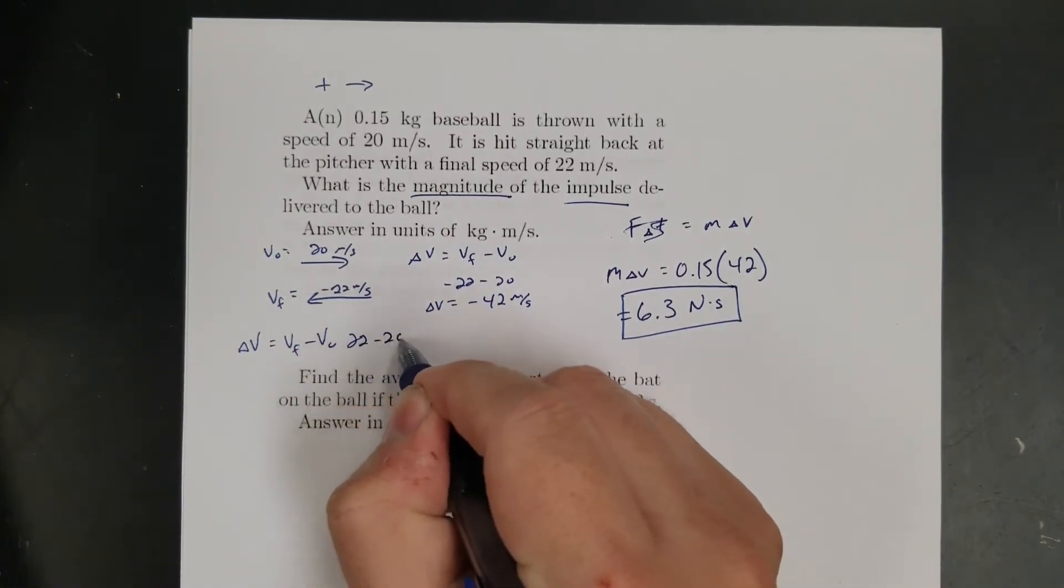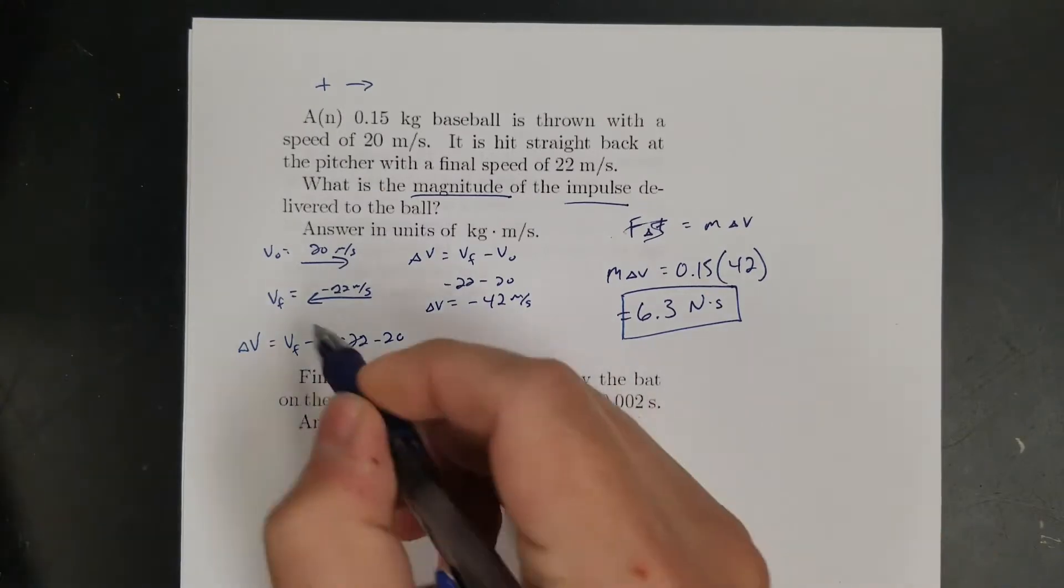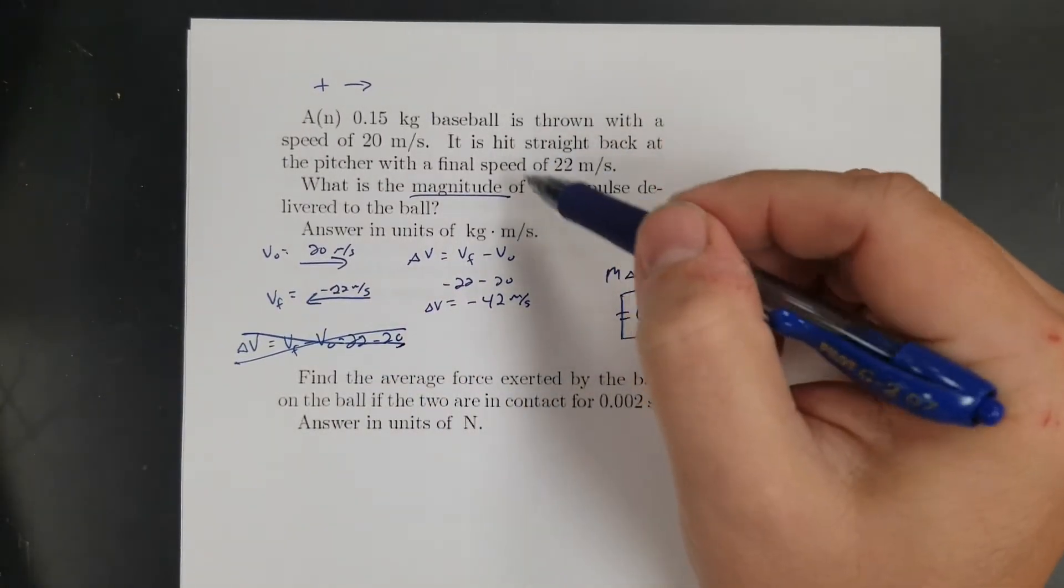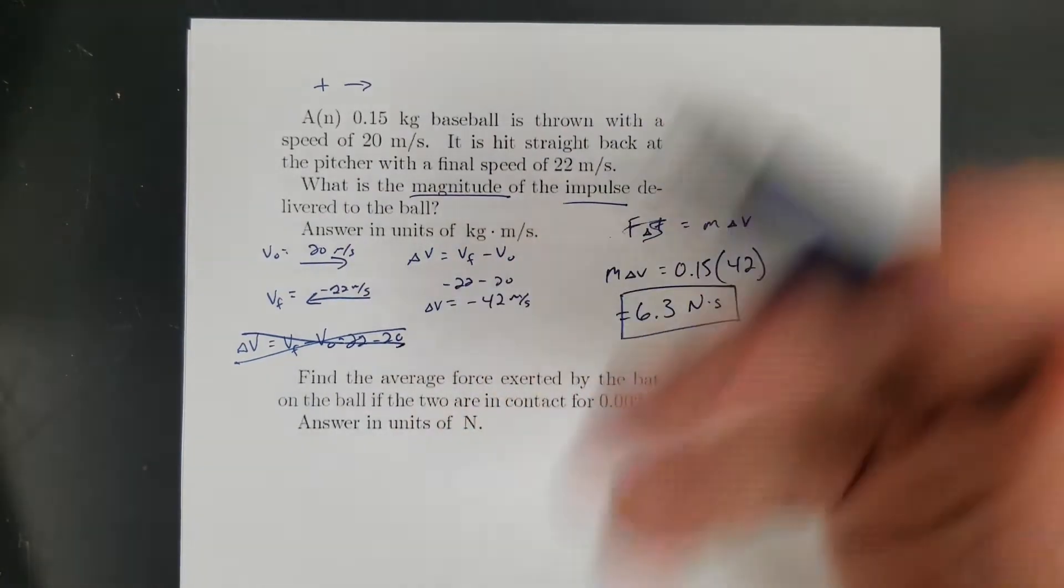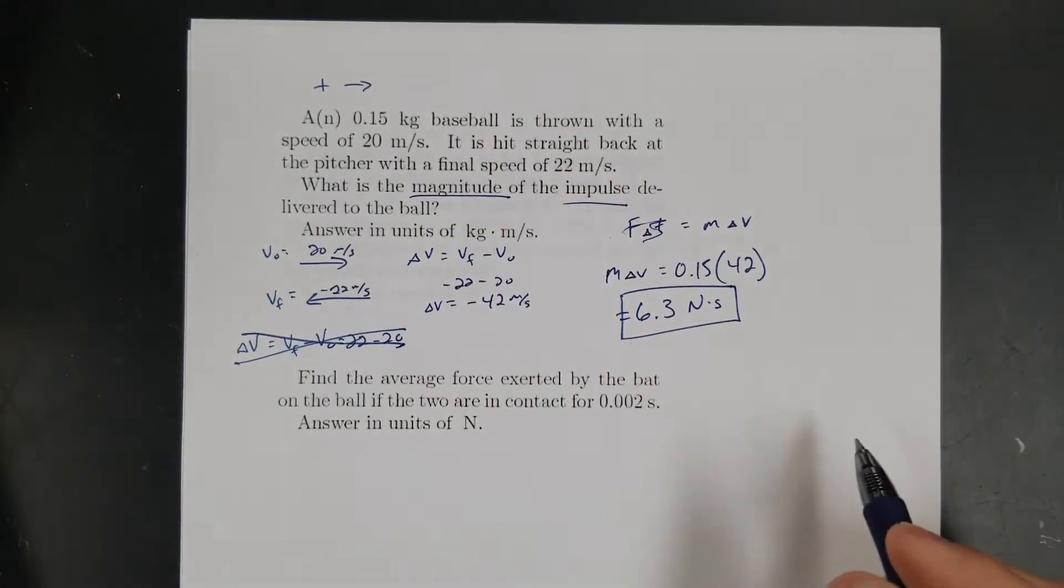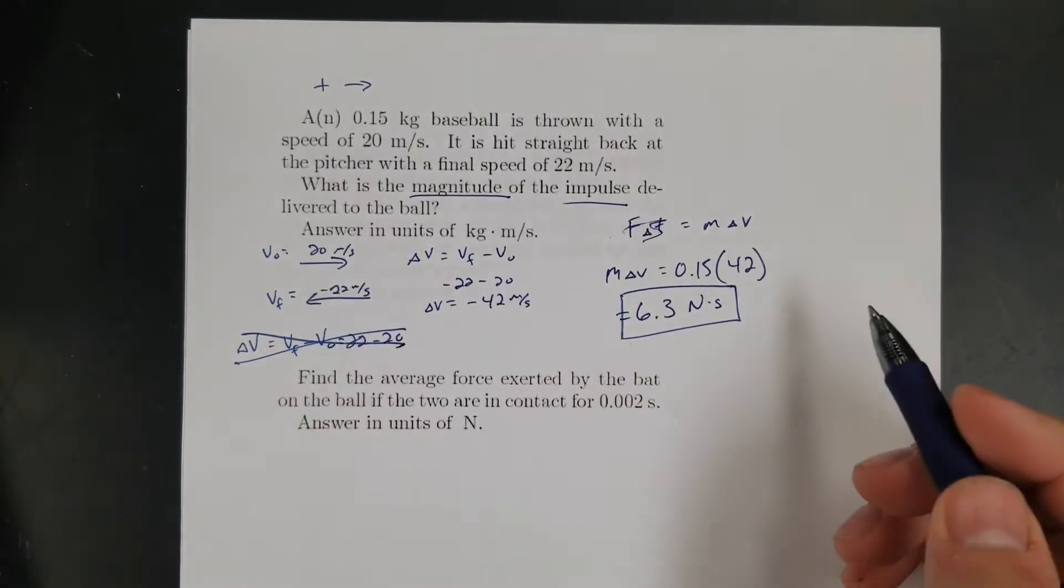So the thing not to screw up on this one is to say that the change is final minus initial, and then say 22 minus 20, right? Don't do that, because remember, these are vectors. So when you're subtracting, if it changes direction, it's really just like adding them, because you had to stop this 20, and then you had to make that other 22 go forward. So the total change was 20 plus 22.